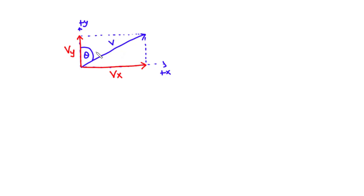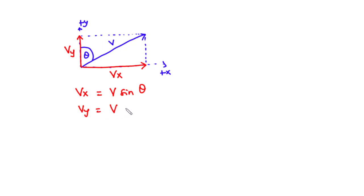To find vx and vy we are going to multiply the magnitude of the vector by either sine or cosine of the angle theta. So vx is given by the magnitude of the vector times sine of theta, and vy is given by the magnitude of the vector times cosine of theta. We can represent a vector in column vector form as [v sinθ, v cosθ].